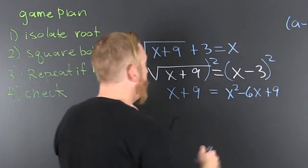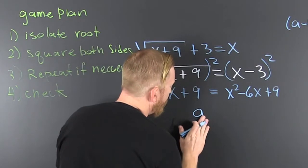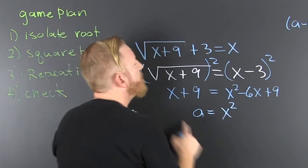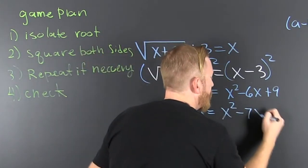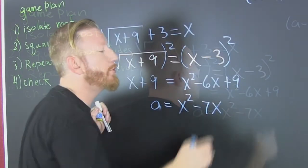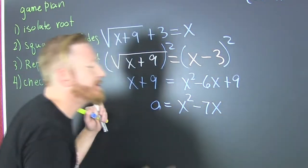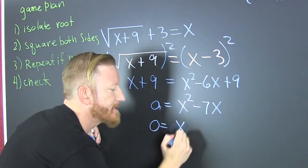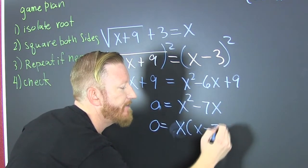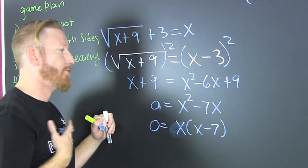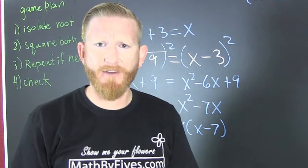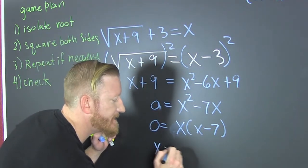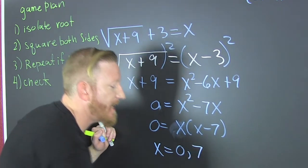Now we get it all to one side. That's a zero. When I subtract off x, that's minus seven x. And when I subtract off nine, the nine is gone. So now I factor: zero equals x times (x minus seven). So my zeros are x equals zero or x equals seven.